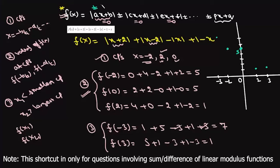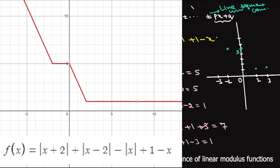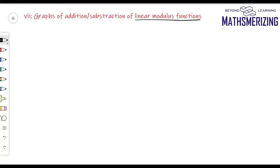Now we draw our axes and mark these points: x = -3, -2, 0, 2, 3 with y values 7, 5, 5, 1, 1 respectively. Since any modulus function in each interval reduces to ±ax+b — a straight line — our entire graph consists of continuous line segments. We join these points sequentially to complete the graph.